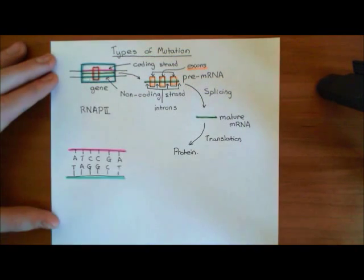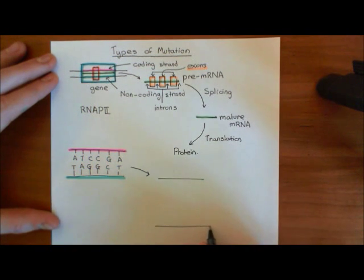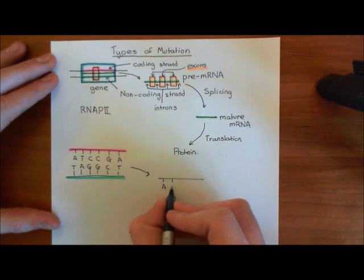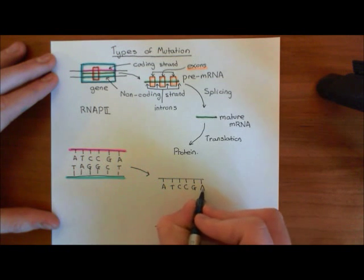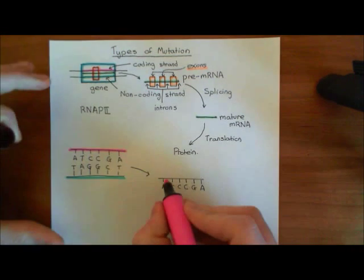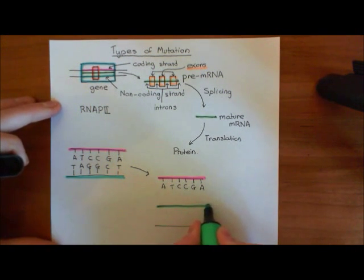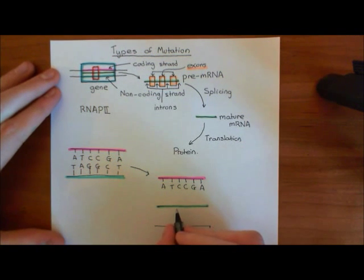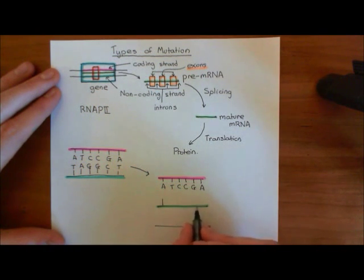Now we're going to produce our piece of mRNA. The two strands come apart, and you produce a piece of mRNA that's complementary to the coding strand. Here again is the sequence of organic bases on this section of the coding strand, coloured in purple. We're now going to produce a piece of pre-mRNA, coloured in green. This will have a complementary sequence of organic bases to the coding strand — but remember, mRNA does not have thymine; it replaces thymine with uracil.